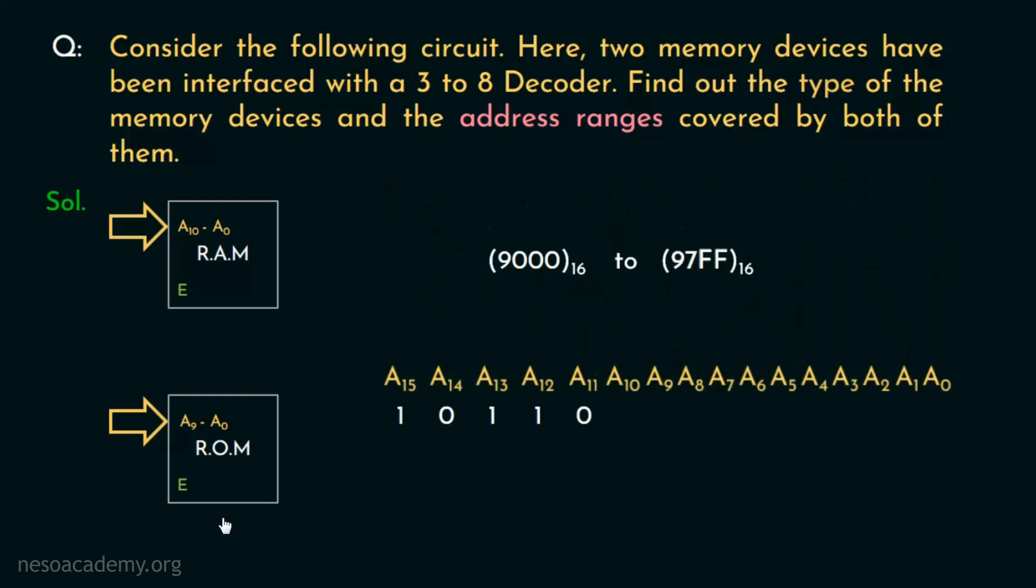Let's now consider the ROM. Looking at the ROM, we can observe the address lines A9 to A0 are given to this. So the first address covered by the ROM will have all zeros in the bit places A9 to A0. And eventually, the last one will have all ones. And the address lines A15 to A11 will naturally remain the same.